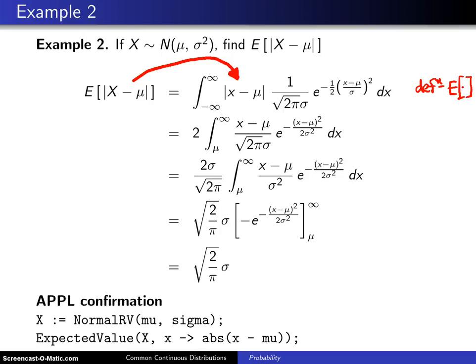Now, the second thing we do is we change the limits. Instead of going from negative infinity to infinity, we go from mu to infinity. We drop the absolute value bars, and we double. All of that is based on the symmetry of the probability density function f of x about mu.